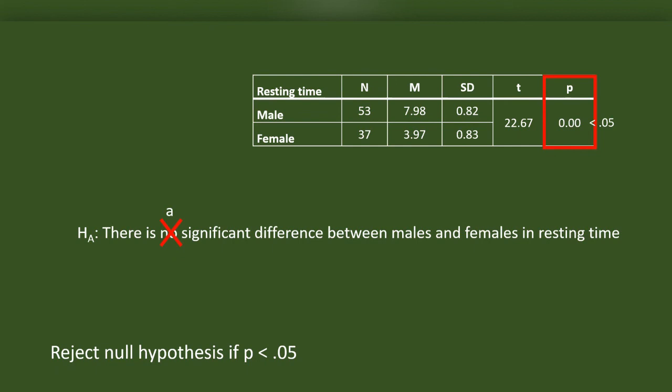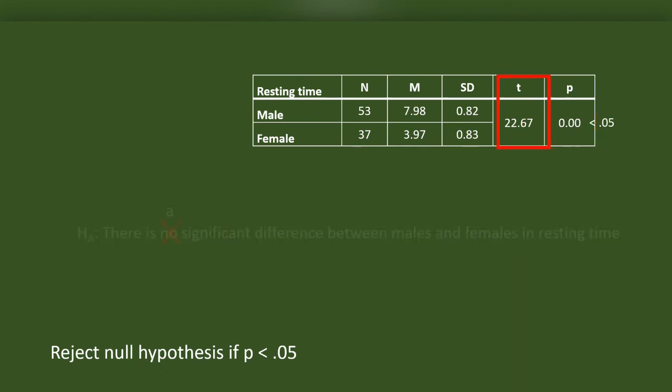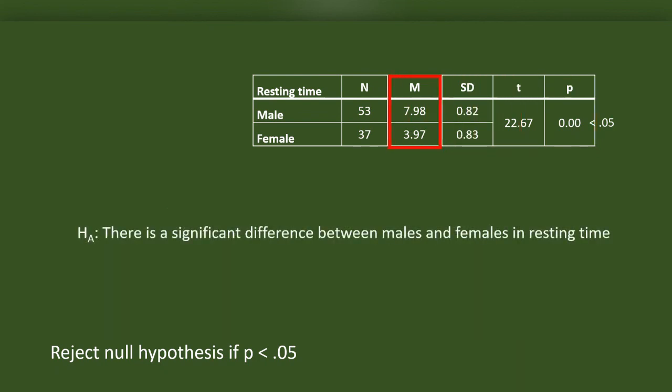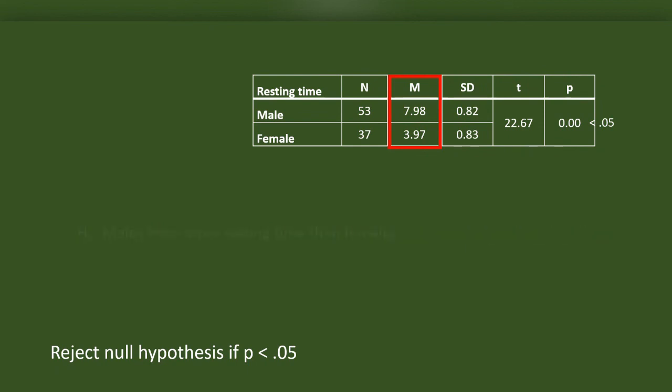Now, who has a higher resting time? To answer this we refer to the mean. The mean for males is 7.98 and the mean for females is 3.97. Males have a higher resting time than females. This is no longer a hypothesis — it is our finding.